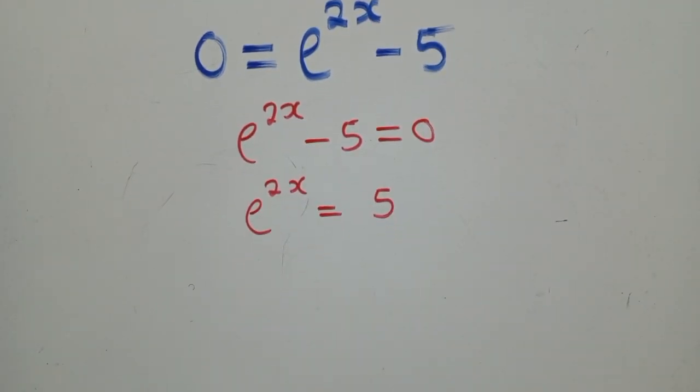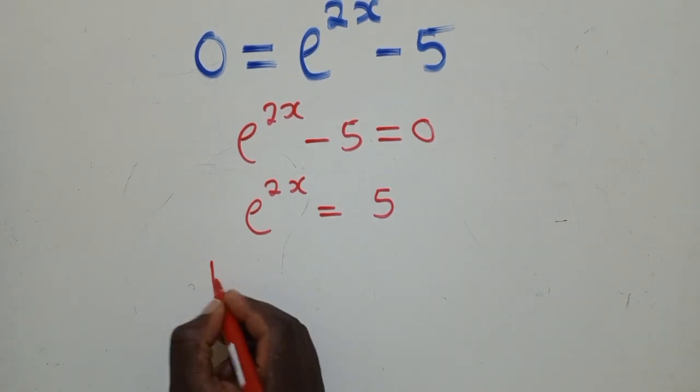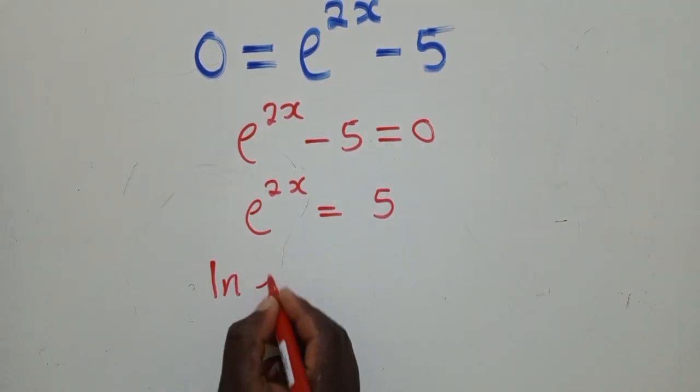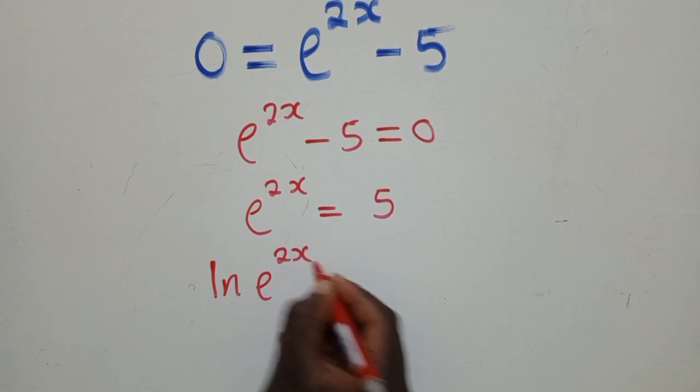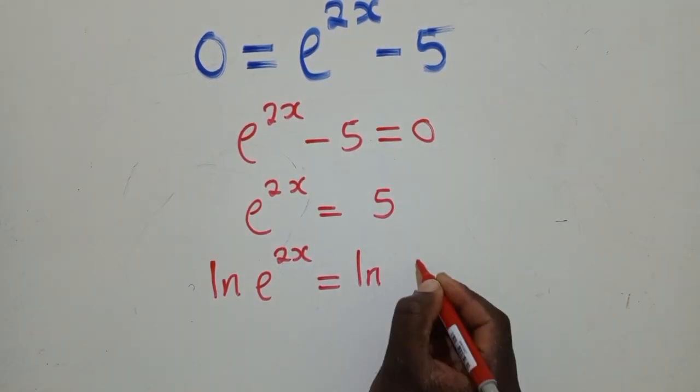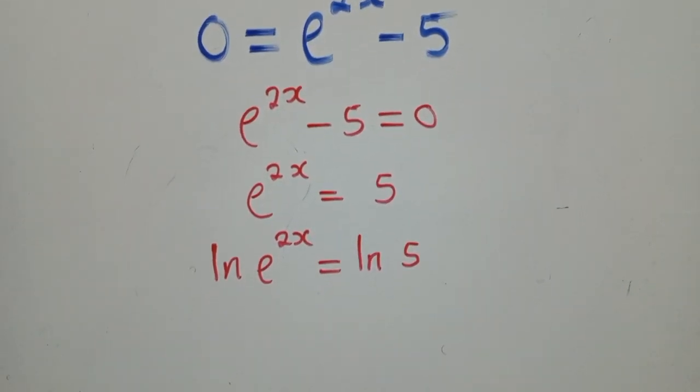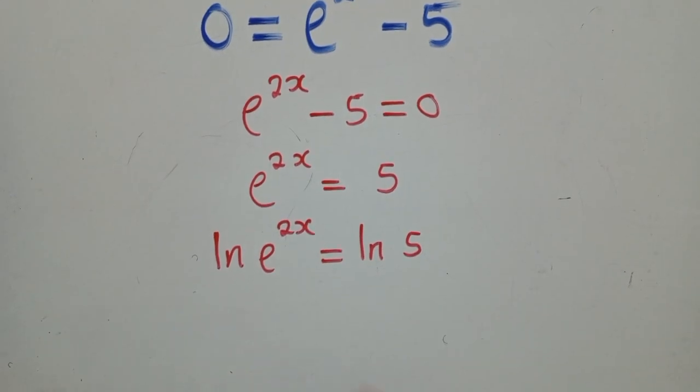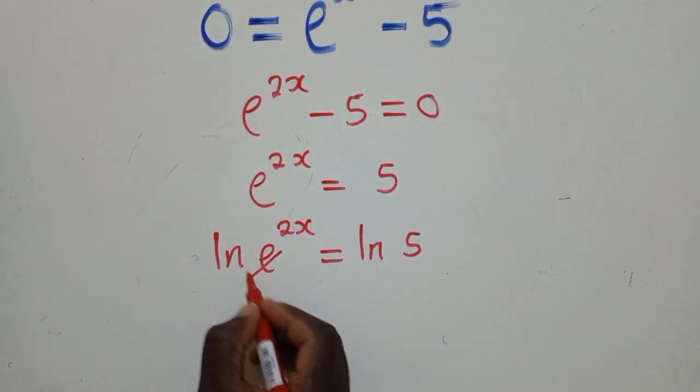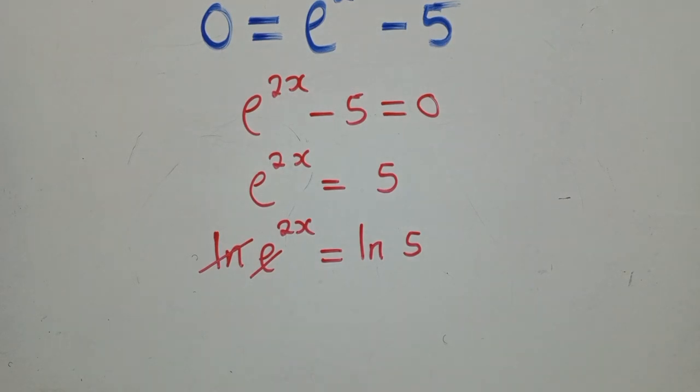Thereafter, we introduce ln. So it will be ln of e power 2x is equal to ln of 5. Okay, so the whole idea of applying ln, we want to cancel the e. So ln and the e will cancel.